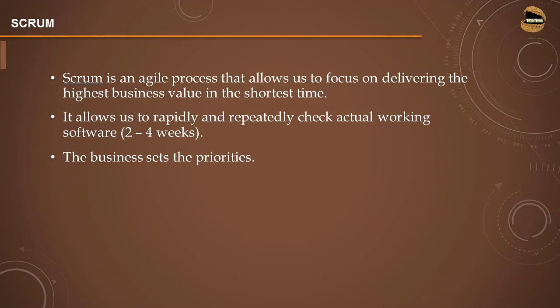Unlike traditional approaches, Scrum helps you to create business value and deliver work products in the shortest interval of time, where the shortest interval could be two to four weeks — a fortnight or at least a month. It allows us to rapidly and repeatedly check actual working software in this interval. Every sprint or iteration, you actually deliver a product, and the business sets the priorities of activities to be covered.